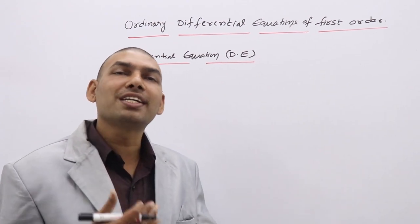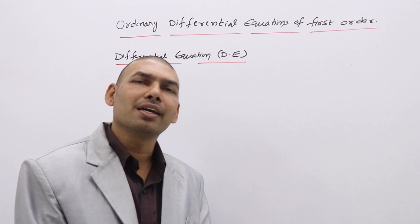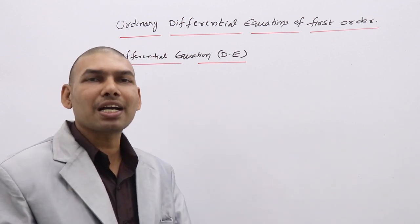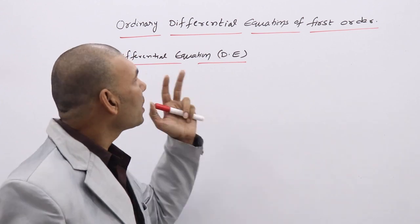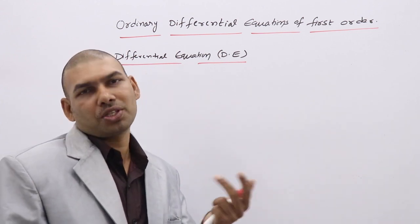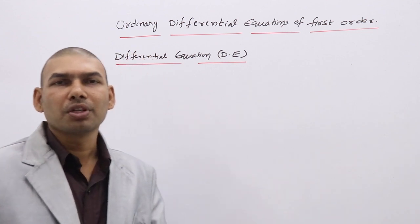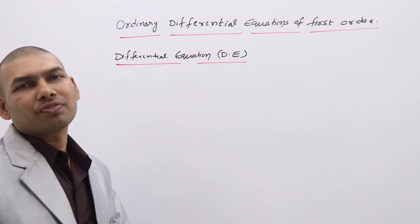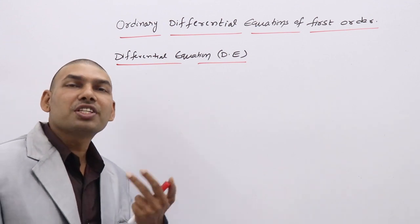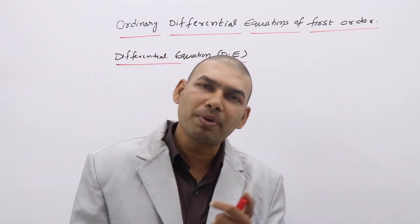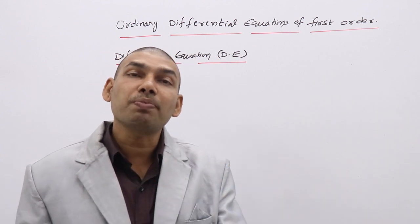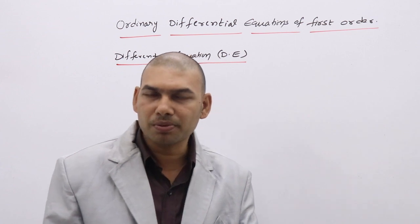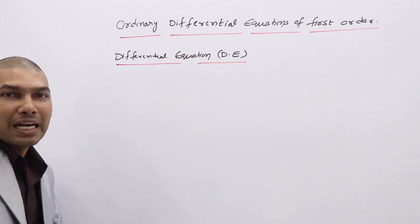Based on how the derivatives appear, the differential equation is classified into two types: one is ordinary differential equation, and another one is partial differential equation. The actual definition of a differential equation is: an equation which involves derivatives of a dependent variable with respect to one or more independent variables.